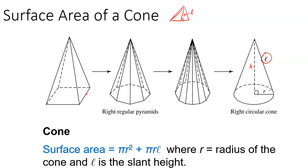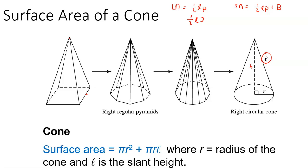The formula from the book for cone lateral area is pi R L. But we can relate it to what we already know: one-half slant height times the perimeter of the base. The perimeter of the base of a circle is 2 pi R. So one-half times 2 pi R times L — the 2 and one-half cancel — gives pi R L. Why memorize pi R L when one-half slant height times perimeter works for both pyramids and cones?